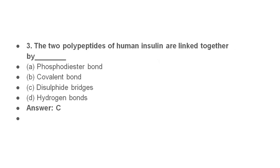Two polypeptides of human insulin are linked together by disulfide bonds. There are three polypeptide chains: A, B, and C. C is inactive. A and B are active. In commercially prepared insulin, the two polypeptide chains A and B are produced separately and then linked together by disulfide bridges.